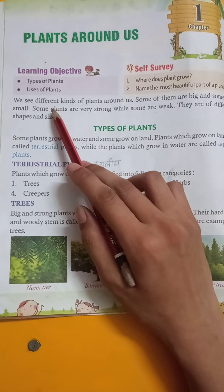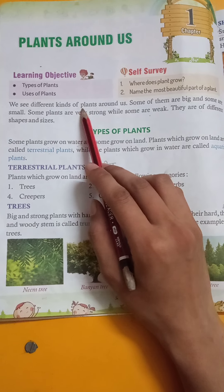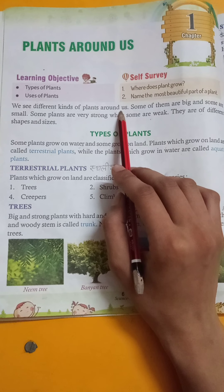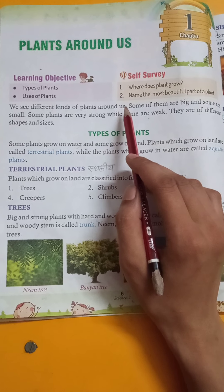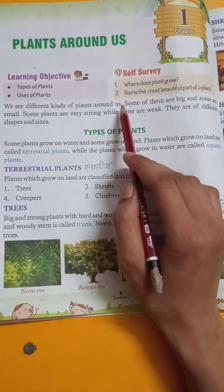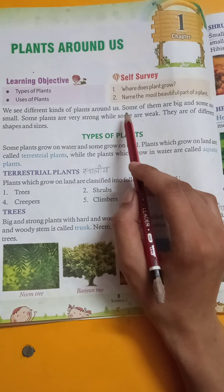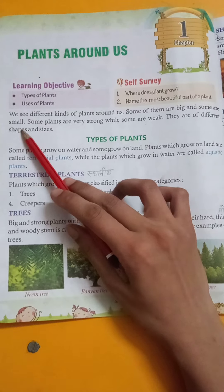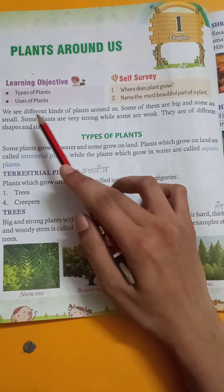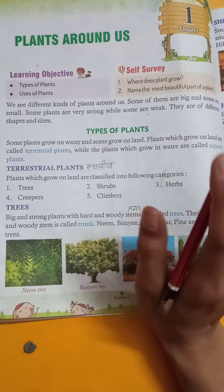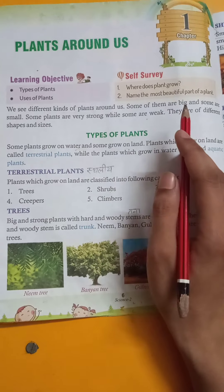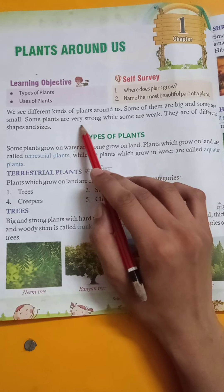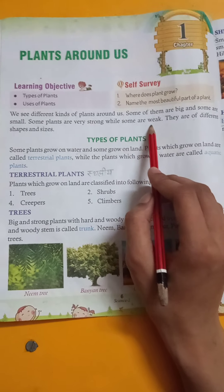We see different kinds of plants around us. We see some of them big and some are small. Some plants are very strong while some are weak.